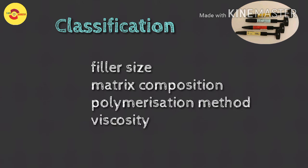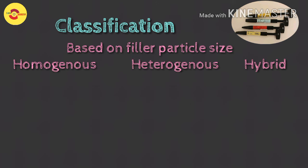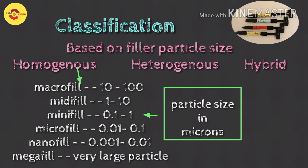Moving on to the classification of dental composites currently in use: they are classified based on filler particle size, matrix composition, polymerization method, viscosity, and filler particle type. Based on filler particle type, we have homogeneous, heterogeneous, and hybrid composites. Homogeneous composites are mainly macrofill, midifill, minifill, microfill, nanofill, and megafill.